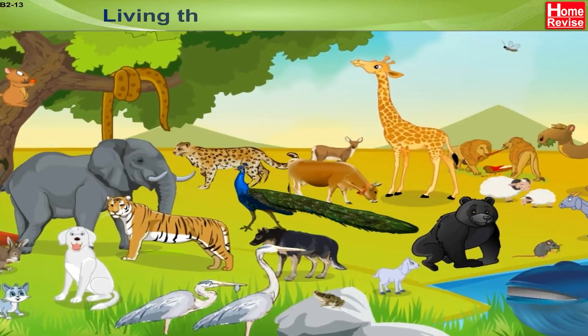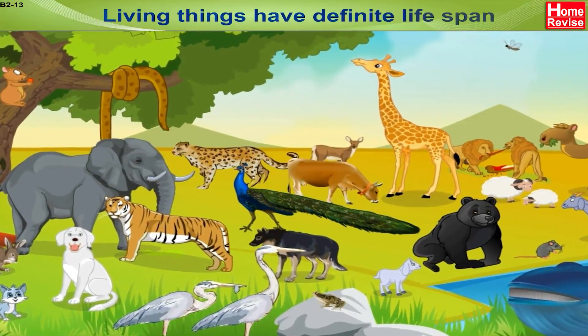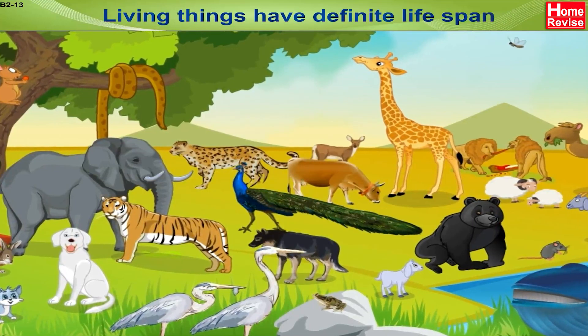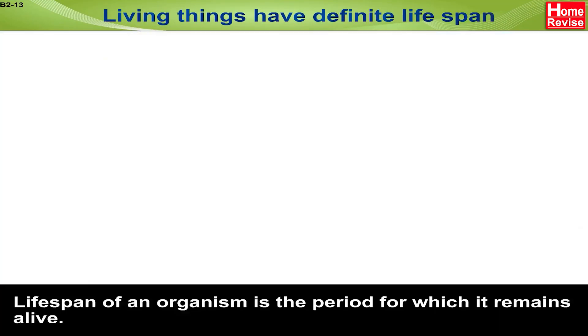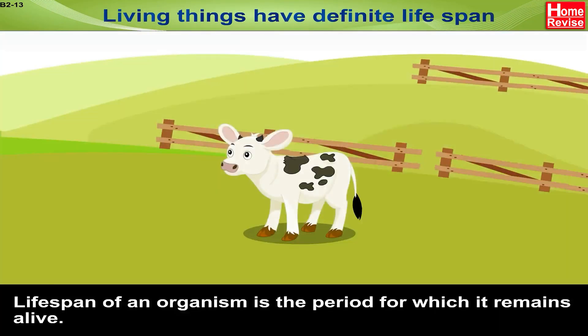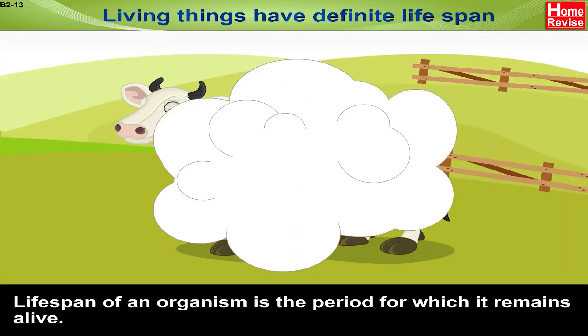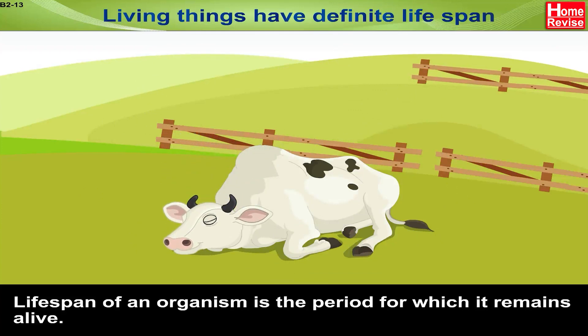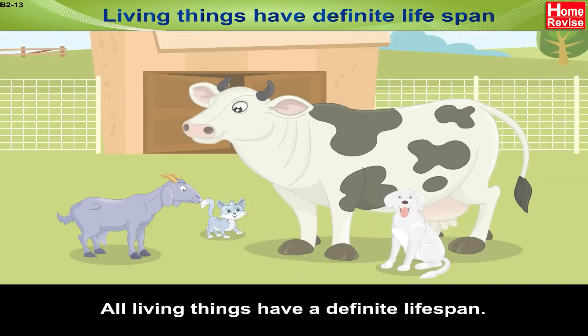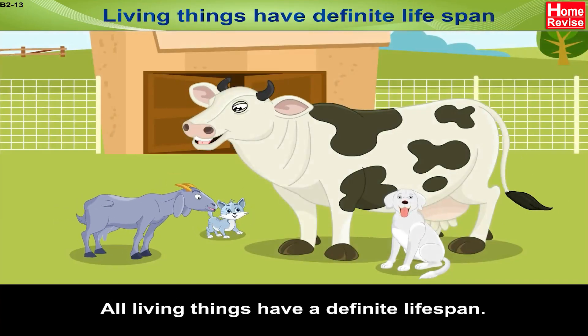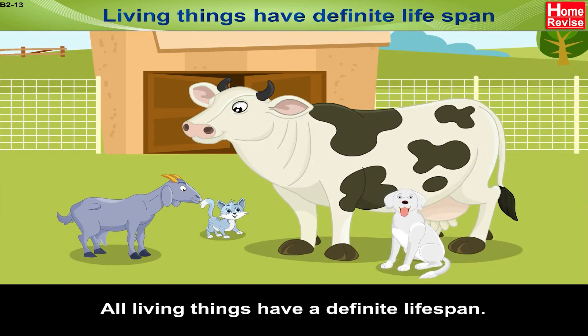Living things have a definite life span. The life span of an organism is the period for which it remains alive. All living things have a definite life span.